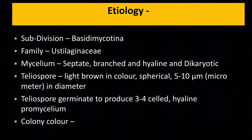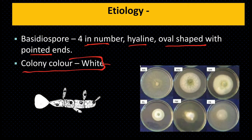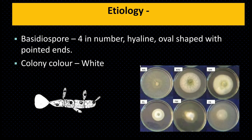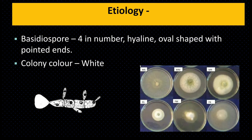Teliospore germination produces a promycelium divided into 3 to 4 cells (septate). Each cell produces one basidiospore. Basidiospores are colorless, oval-shaped with a pointed tip.